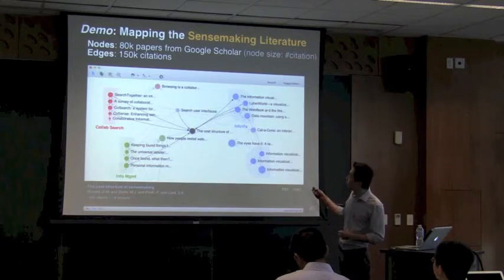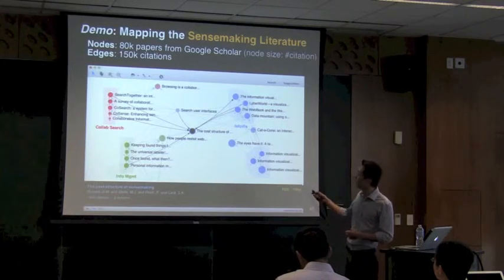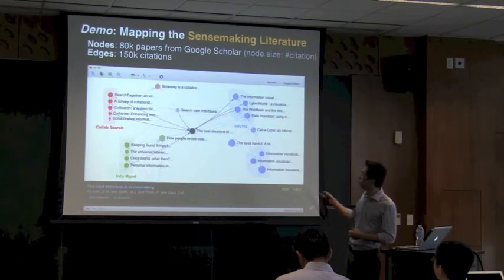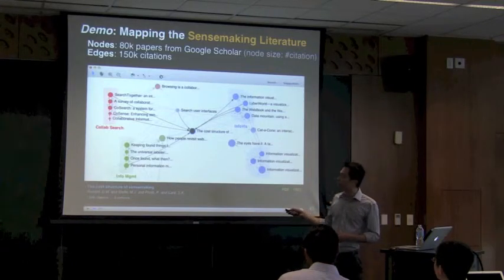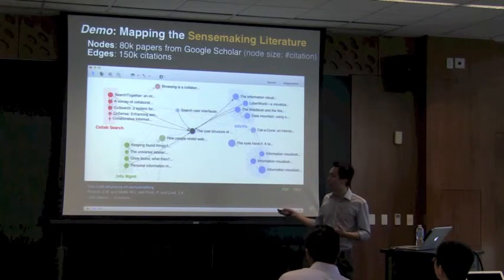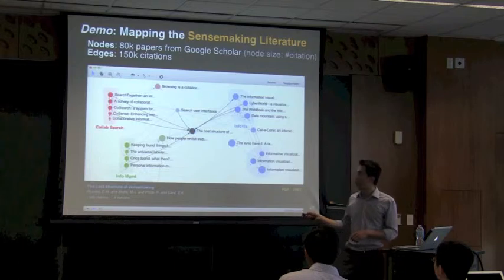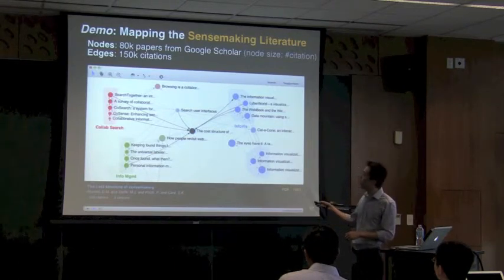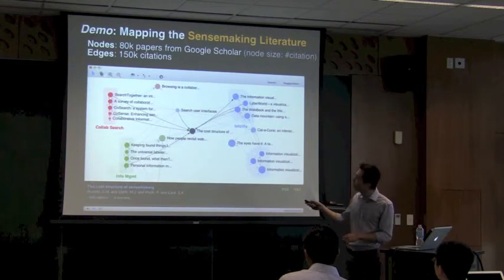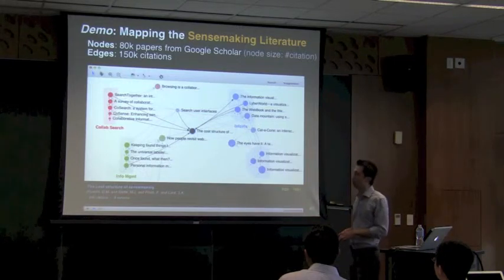What you want to do is find the related areas — here in blue, information visualization; then another area about collaborative search; and another area about information management. You want to find these areas and also find some good examples of papers in each of them. This is the outcome that we want.